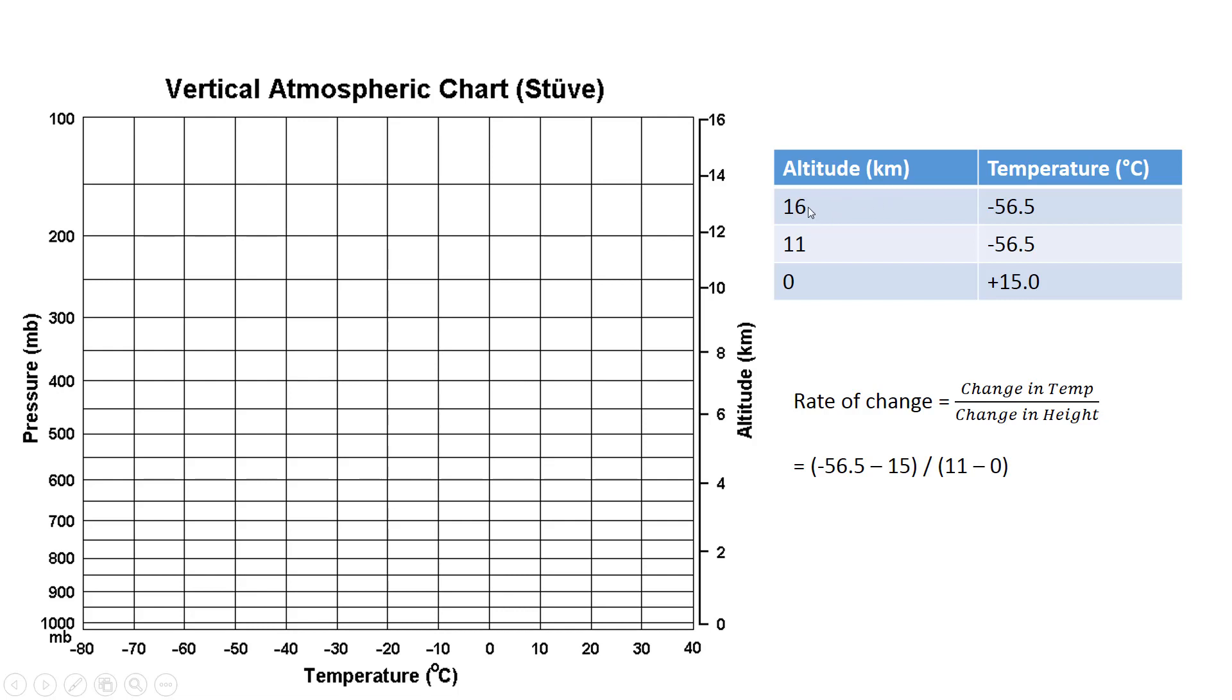And basically, all we have to do is then plot points for those corresponding values. So, a point for altitude and temperature, where they intersect, and then we connect the dots. So, let's do that. So, here we have three points.